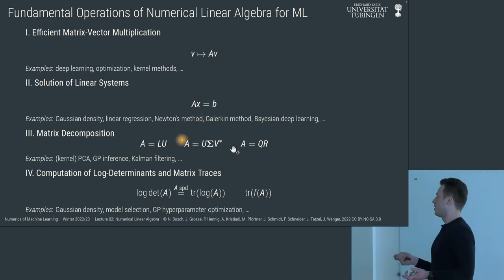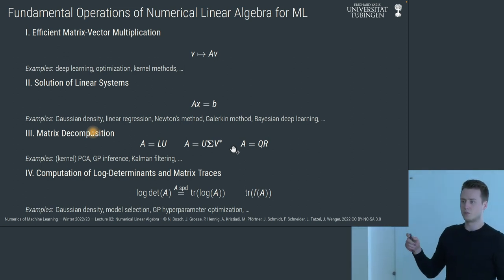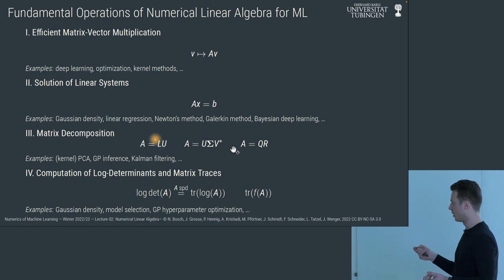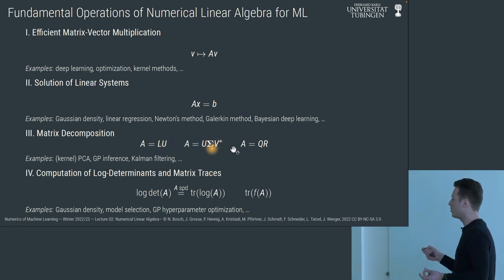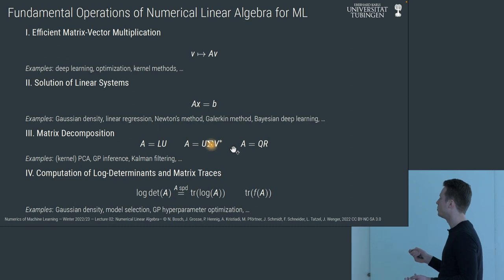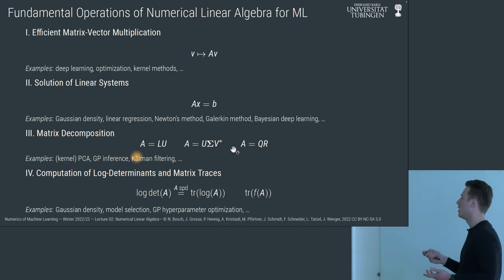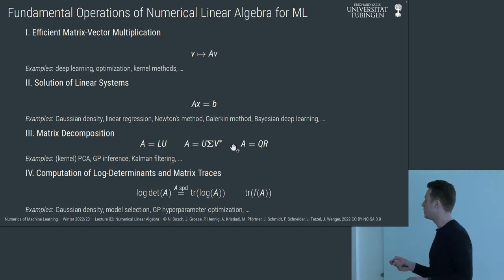To achieve these and tasks like PCA, we need matrix decompositions — factorizations of matrices into matrices with prescribed structure, for example a lower triangular and upper triangular matrix. There's also the singular value decomposition, which decomposes into orthogonal matrices U and V and a diagonal matrix, and the QR decomposition — an orthogonal matrix and upper triangular matrix. These are needed for PCA, GP inference, and Kalman filtering.